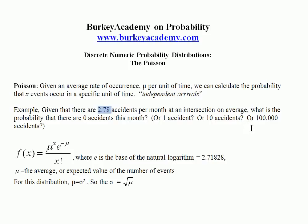So given that number, we might want to be able to calculate what is the probability that there are no accidents this month, or one accident, or ten, or a hundred thousand.